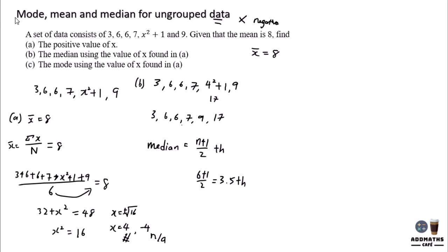And 3.5 is between this. So it is between that. So your median will then be 6 plus 7 divided 2. It will give you 6.5. So this is your median.